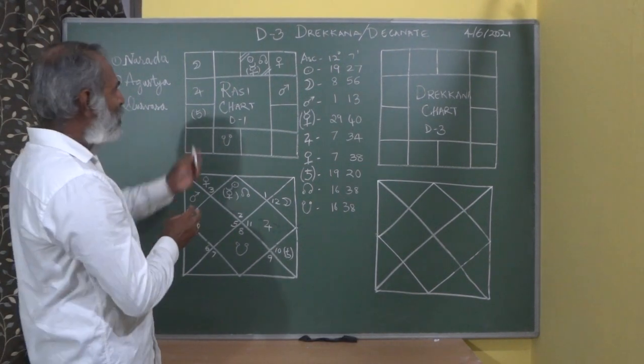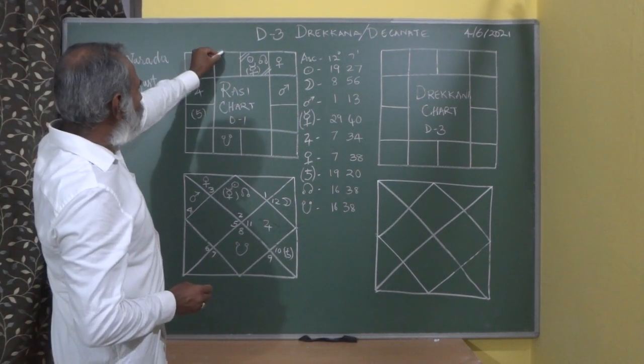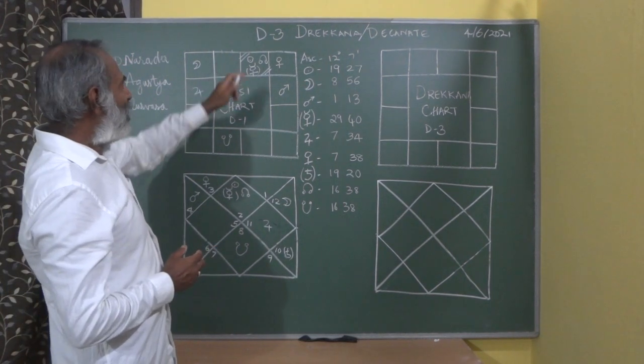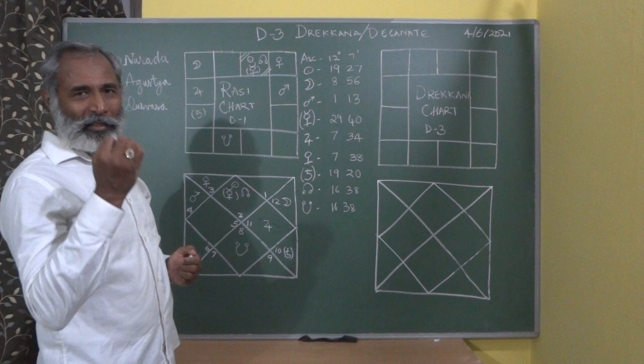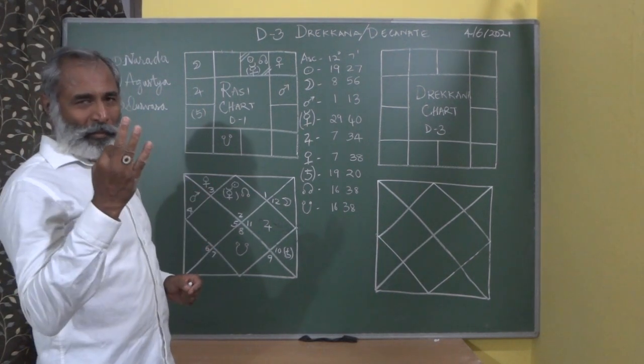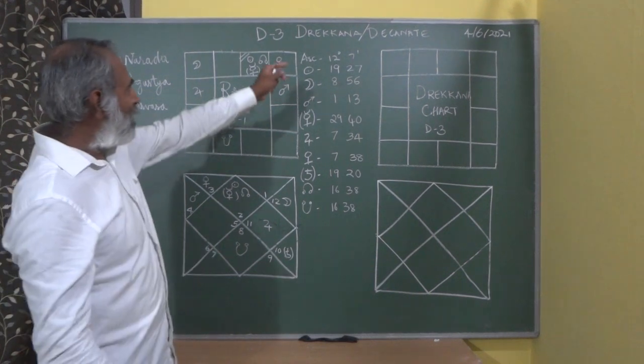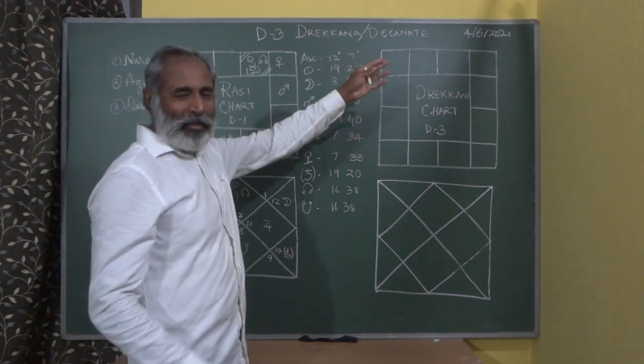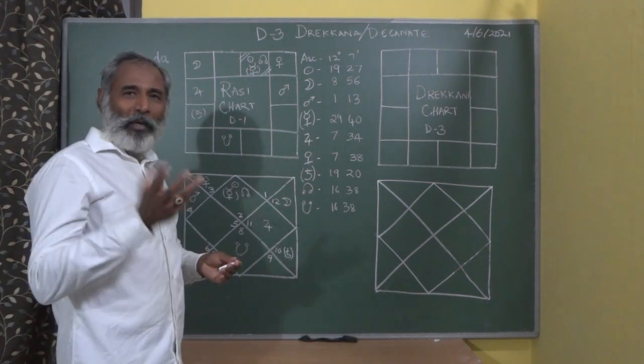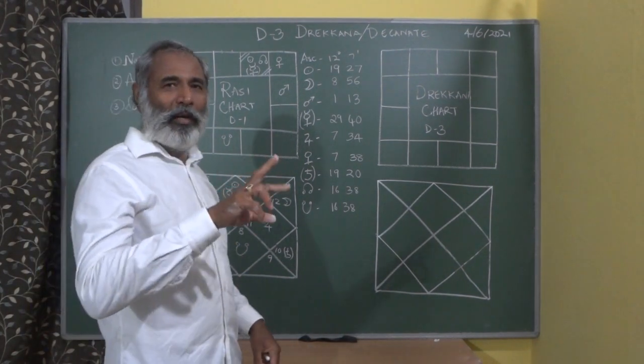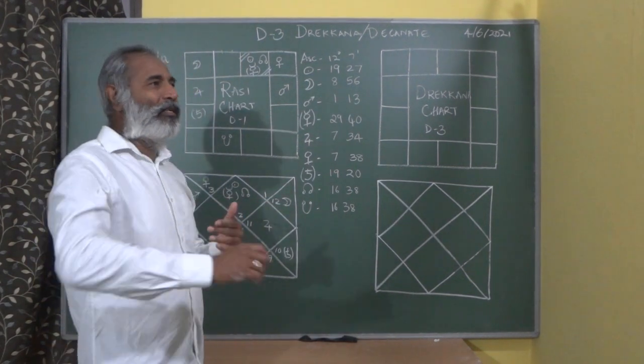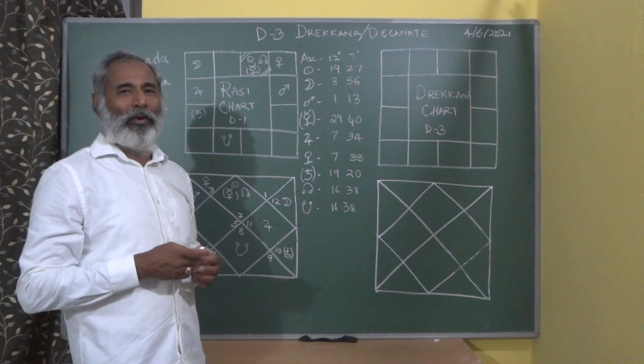Every Rashi will be divided into three equal parts of 10 degrees each. When divided into three pieces, that is three Kana. Kana means divisions. Tre means three. Trekkana, Drakana, or Dekanate - there are many names for this. Just as Ahoratra means day and night, two pieces, the Sanskrit names have evolved this way.